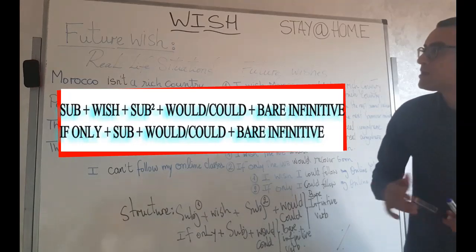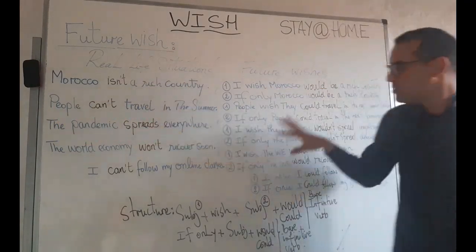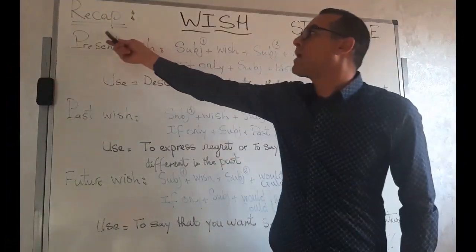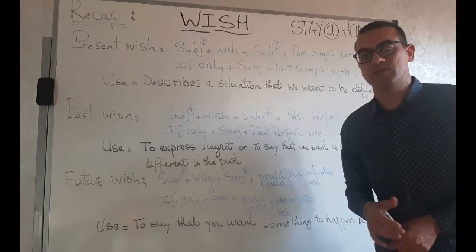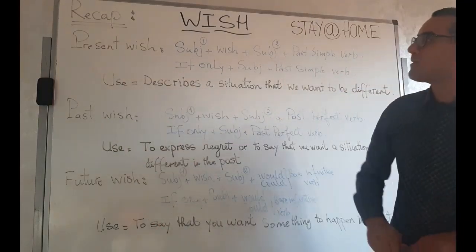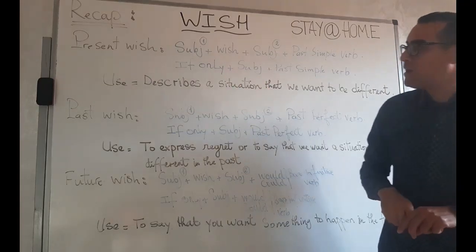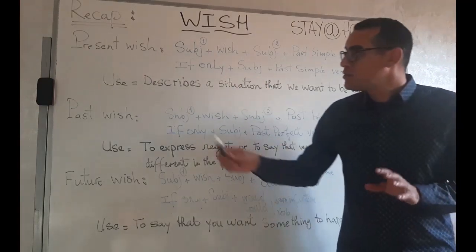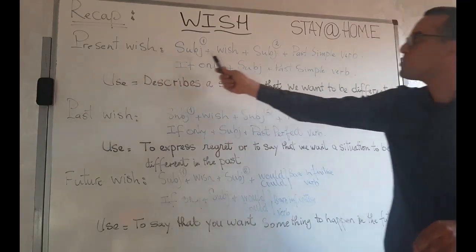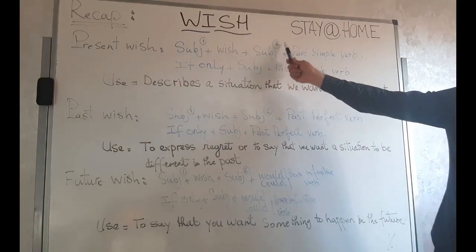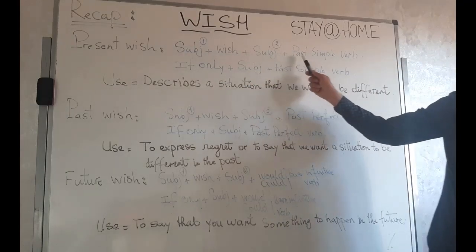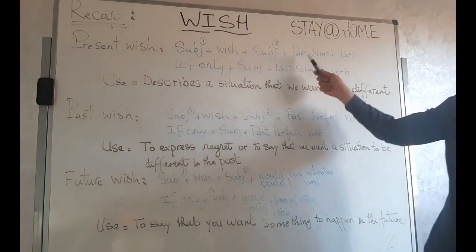Now let's recap everything covered today. For the present wish, the structure is: Subject + wish + Subject + past simple verb. We use the present wish to describe a situation that we want to be different from the current situation. For the past wish, the structure is: Subject + wish + Subject + past perfect verb. Or: if only + Subject + past perfect verb.